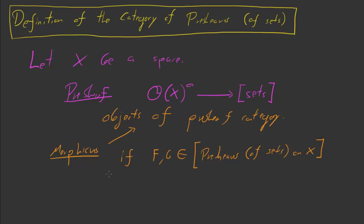And a morphism is just a natural transformation, or a functor-morphism. It's just a functor-morphism from F into G.